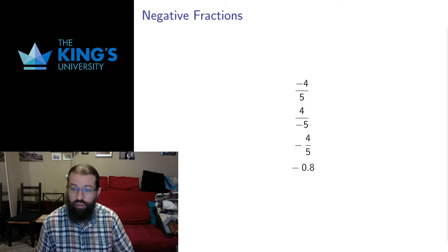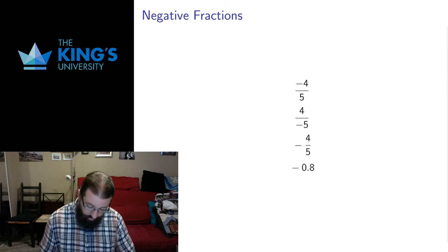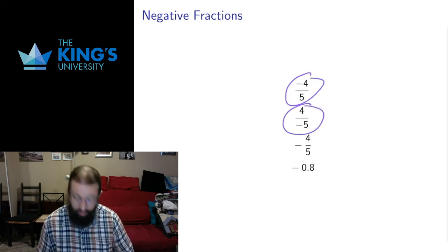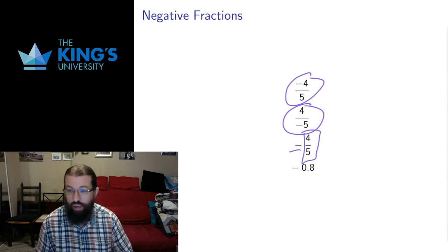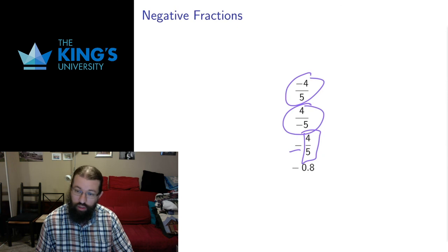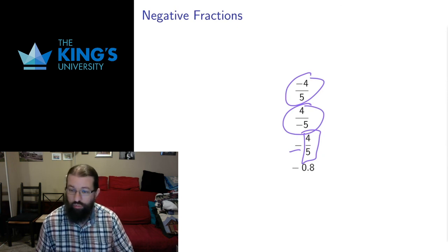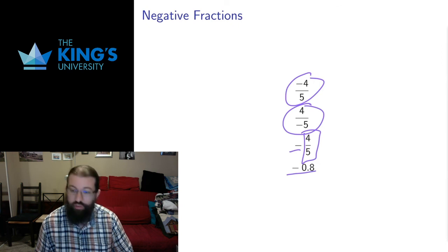Another nice notational thing to get sorted out at the start: if we have a negative in a fraction, either in the numerator or in the denominator, that's the same thing as just having the negative of the fraction. So negative four divided by five, or four divided by negative five, is the same thing as negative four fifths, which is the same number as negative 0.8 if I want to write it in decimal notation.